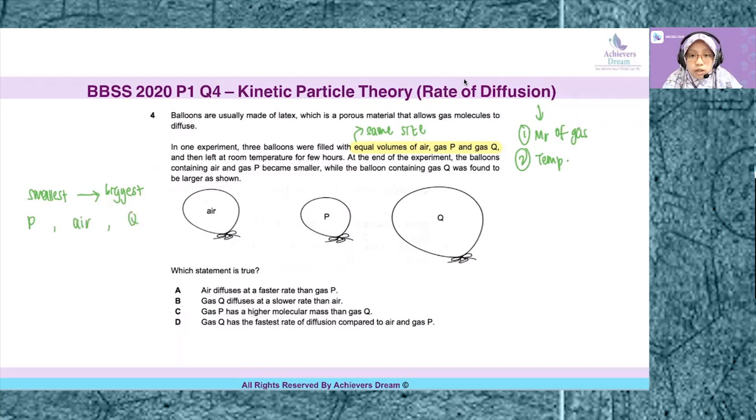Now, let's go back to the factors that affect the rate of diffusion or the speed of diffusion. And it is the molecular mass of the gas. So because the balloon containing gas P, it has the smallest size when the experiment ended, this shows that gas P has the fastest rate of diffusion. And to have the fastest rate of diffusion, gas P must be of a lower molecular mass.